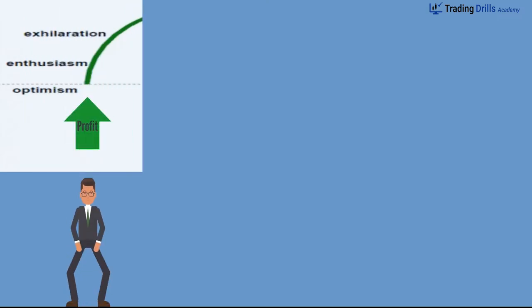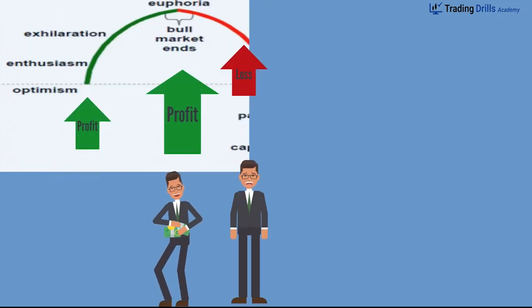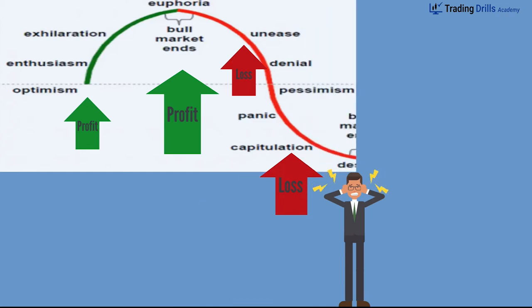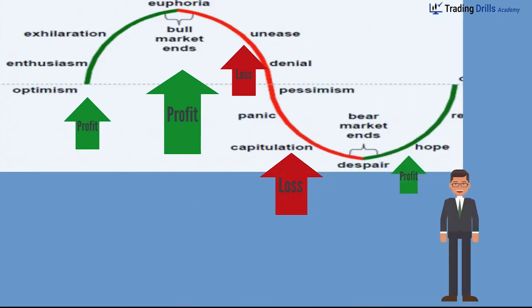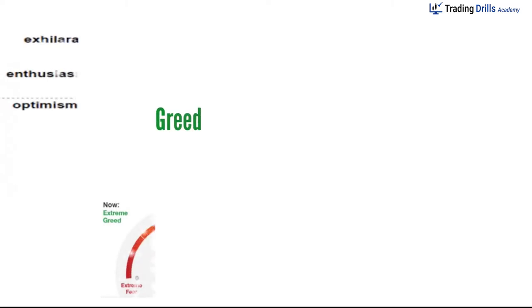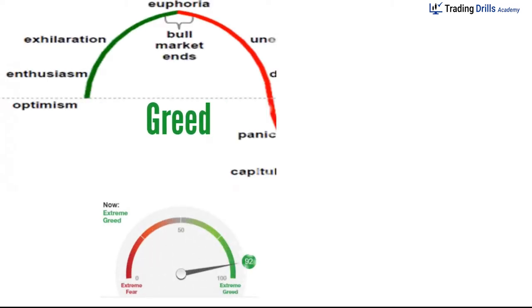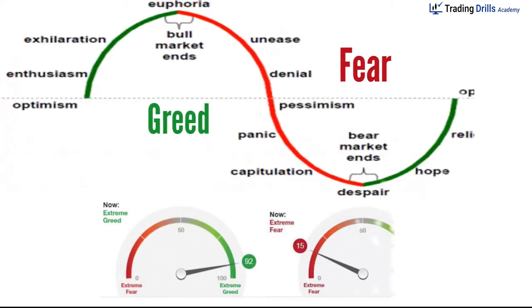This crowd psychology makes the market a live emotional entity, and its mood represents the collective emotional feelings of all its participants. Market participants enter into the greed phase when the price is rising, and the fear phase when the price is falling.